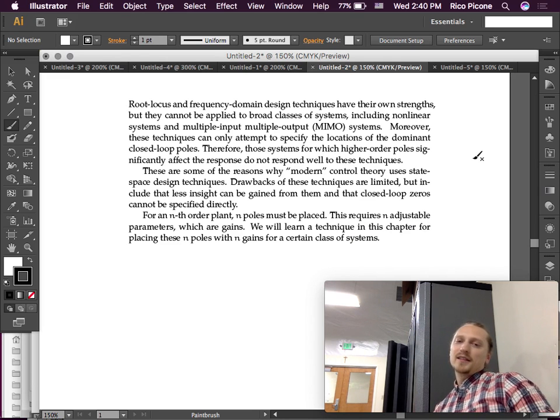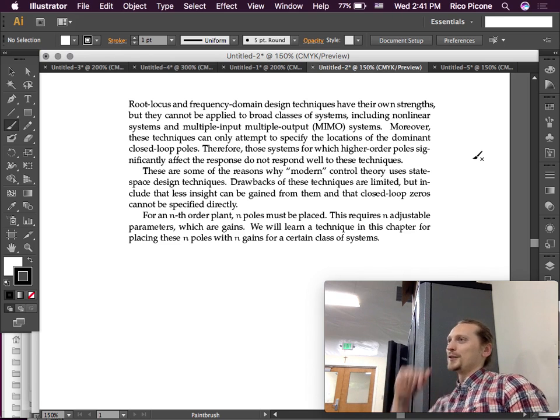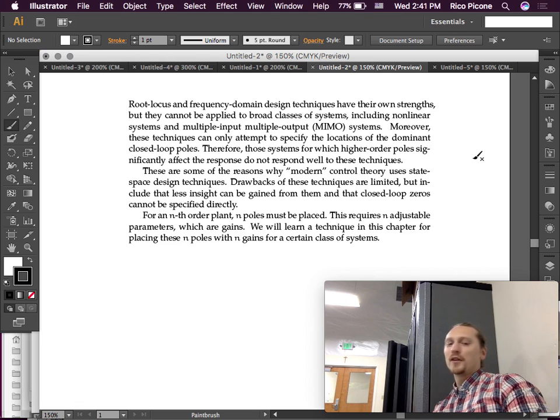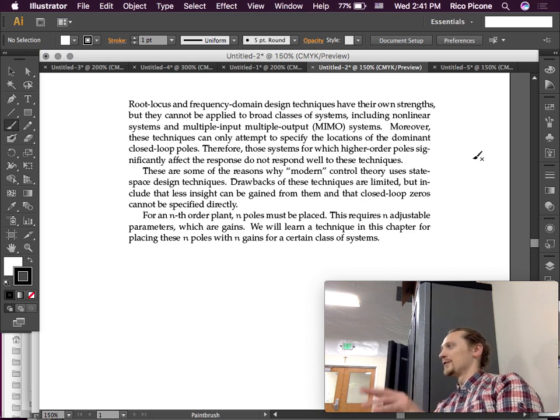For an nth order plant, n poles must be placed for this type of controller design. So if you have an nth order plant, we're going to place all of them where we want. You have five poles, these are where the closed loop ones we want them to be. This requires n adjustable parameters, which are all going to be gains. We're going to have n gains in our controller. So if it's a fourth order system, we'll have four gains to adjust.